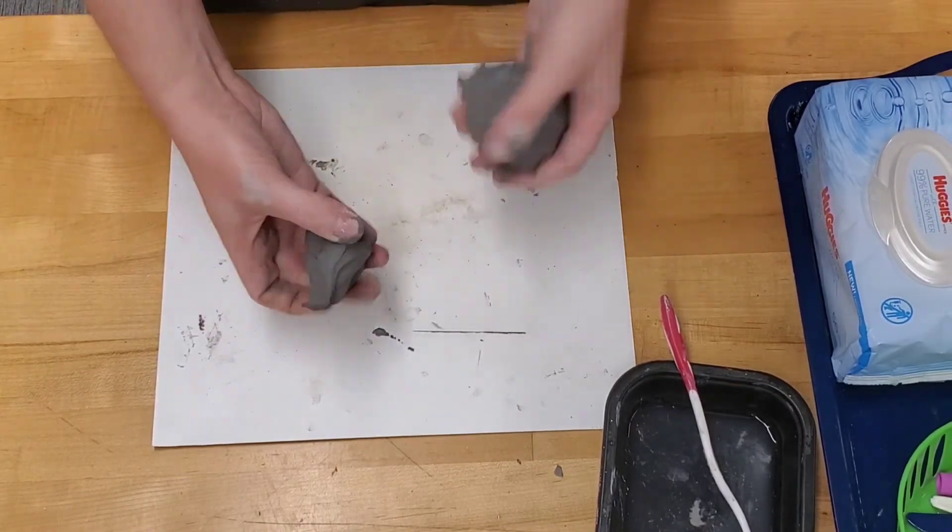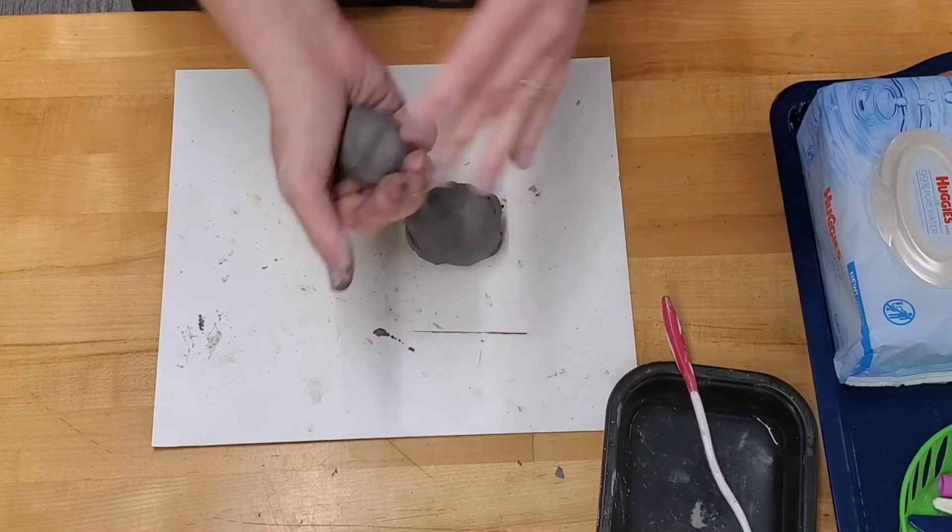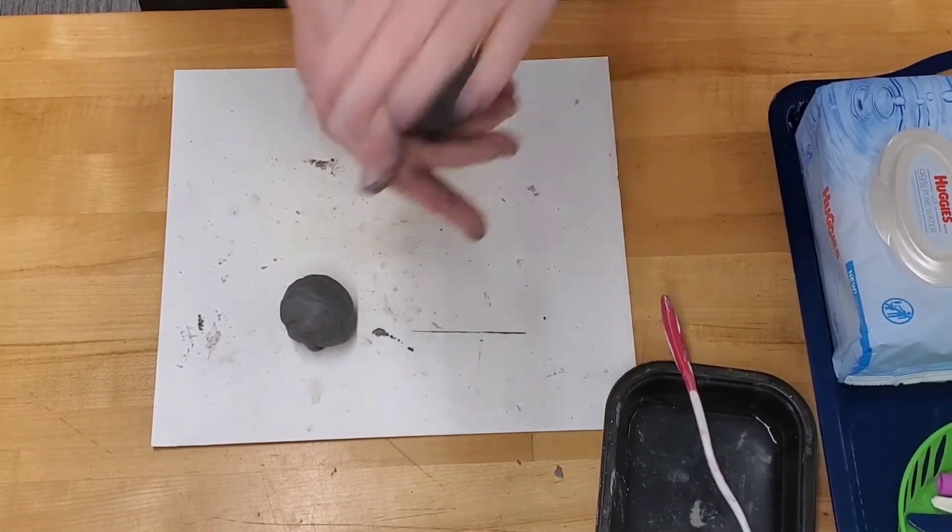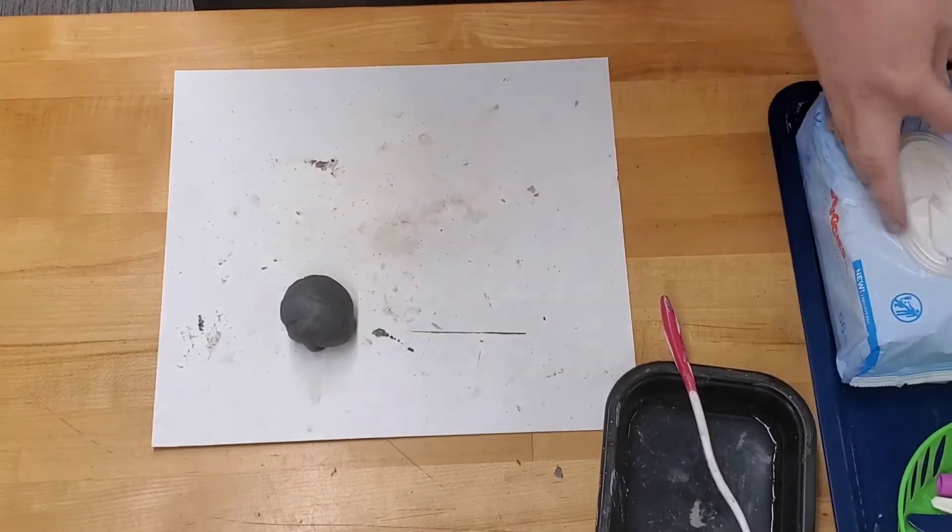First we will split the ball of clay into two pieces, one slightly bigger than the other. You can place the smaller piece underneath a wet wipe for later use.